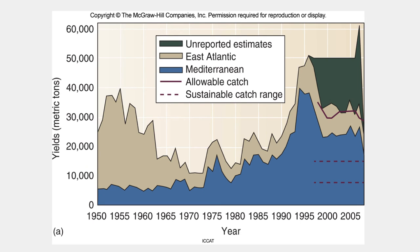Overharvesting of marine resources is also a significant problem. This figure shows the yield of bluefin tuna, a commercially important fish species, since 1950. Note that the allowable catch (solid red line) is significantly higher than the sustainable catch (dashed red line), but that the actual catch is much higher than either. Fish stocks have been seriously depleted by overharvesting in many parts of the world. A huge increase in fishing fleet size and efficiency in recent years has led to a crash of many oceanic systems. Worldwide, 13 of 17 principal fishing zones are now reported to be commercially exhausted or in steep decline. At least three-quarters of all commercial oceanic species are overharvested.